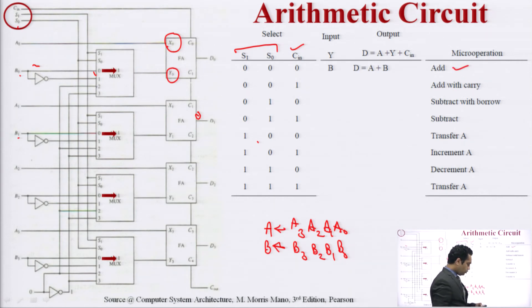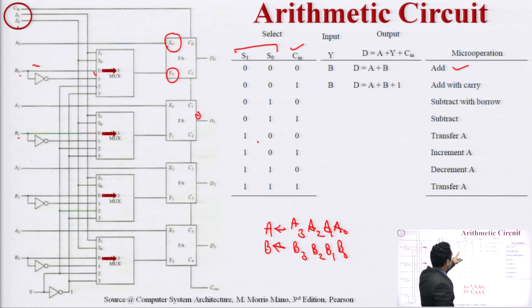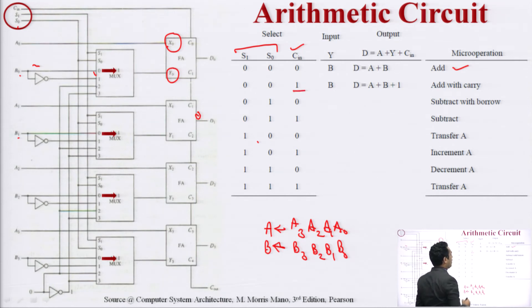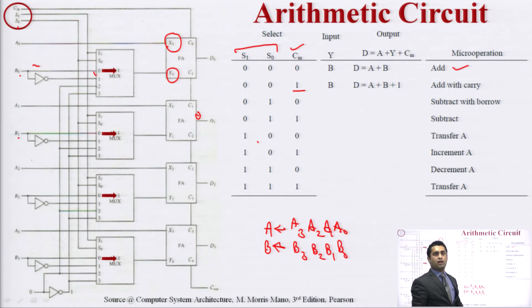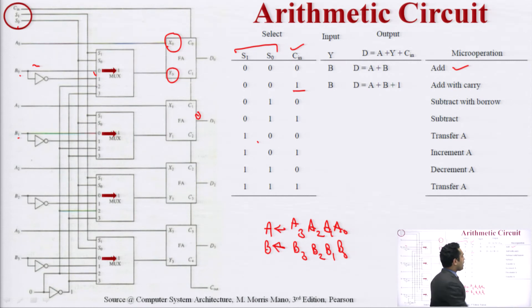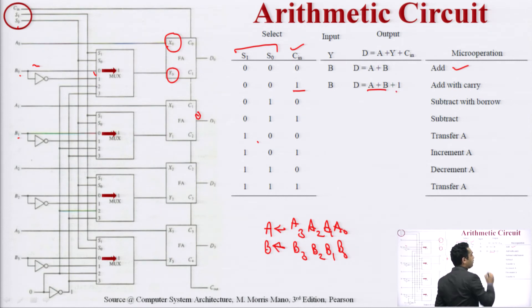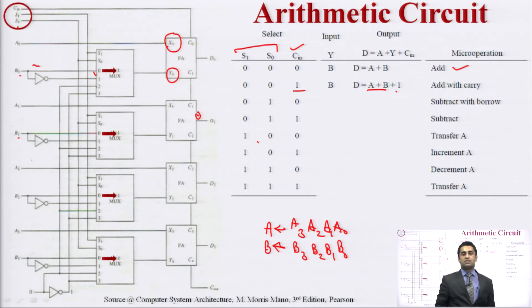The next combination is 001: the same selection lines are 00, but now carry-in is 1. This means we are performing the same addition operation but with an added carry-in of 1. So the micro operation is ADD WITH CARRY — this is the second arithmetic micro operation.